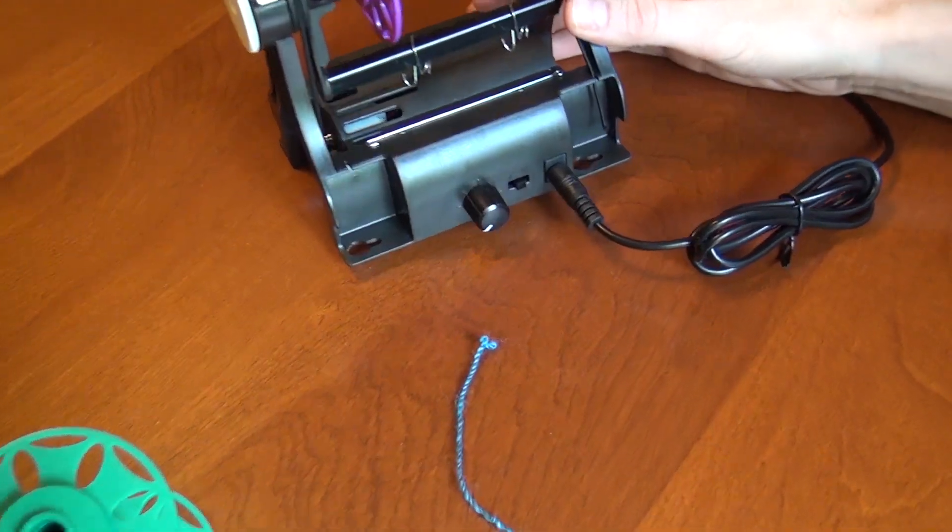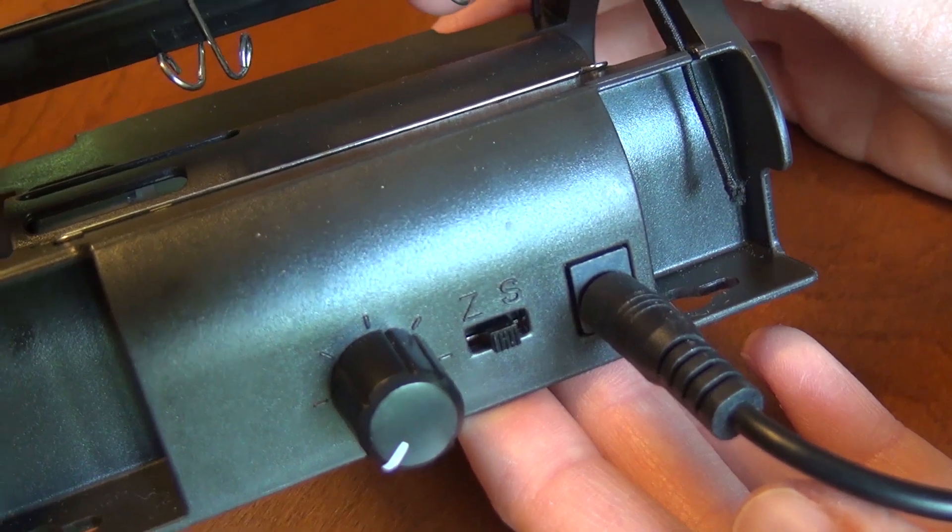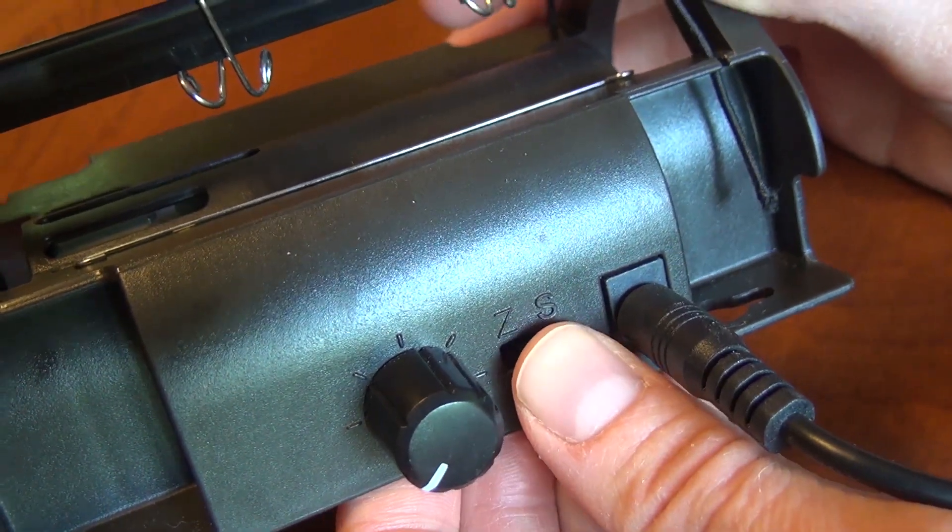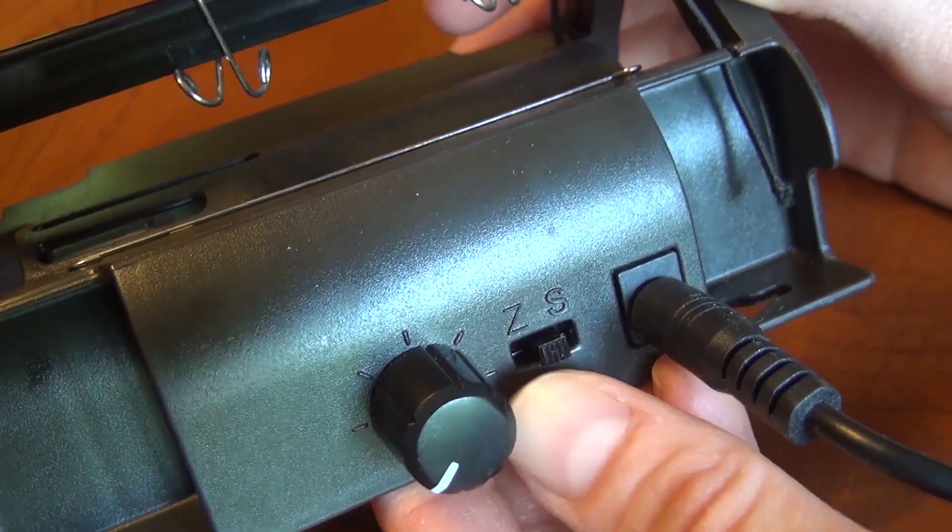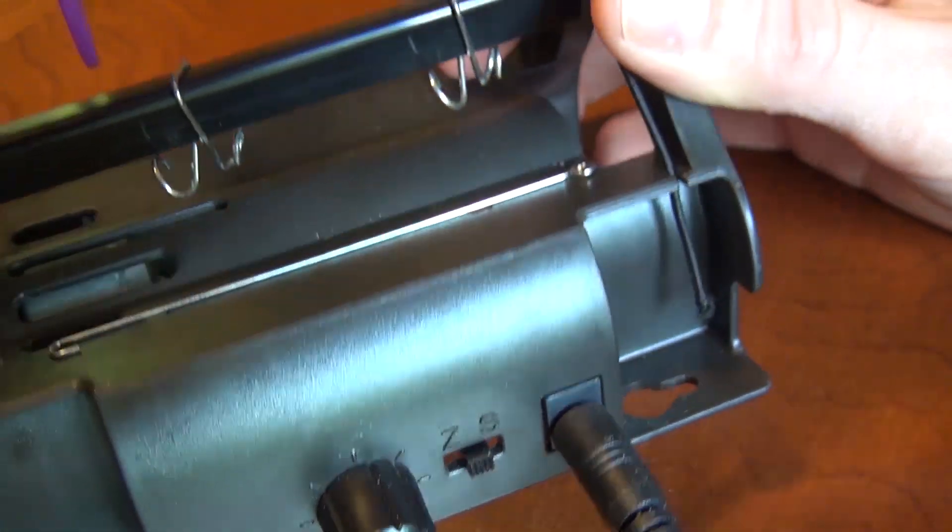Now we're going to go back to an earlier topic where we mentioned that this switch lets you choose the direction the flyer spins which we called Z and S twist. When we say Z and S twist we are referring to the direction of the twist of the yarn.